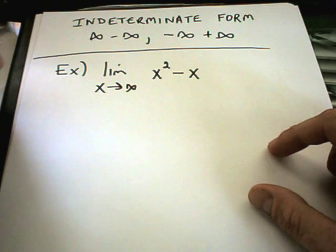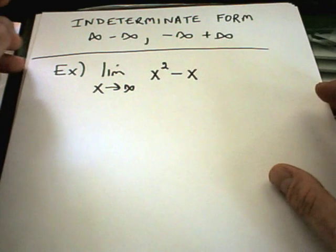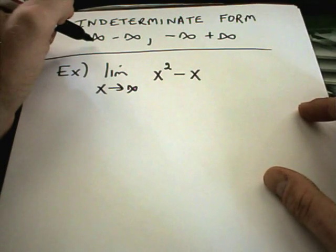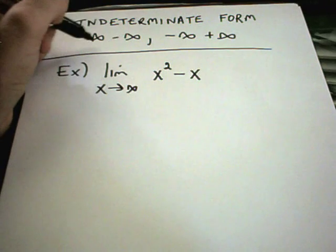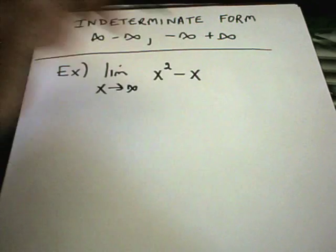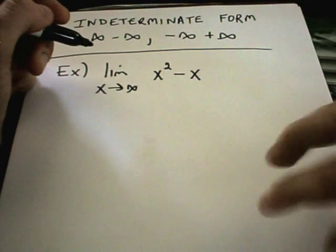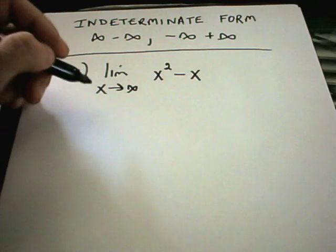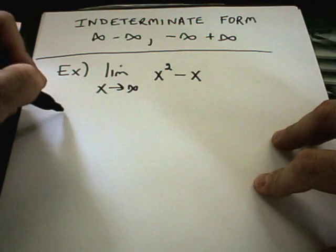The third type of indeterminate form we're going to talk about is sometimes called indeterminate differences. The idea is one part's going to positive infinity and the other part's going to negative infinity — so infinity minus infinity, or negative infinity plus infinity equivalently. These are a little less mechanical than some of the other problems, so sometimes you just have to be a little clever on how you deal with them.